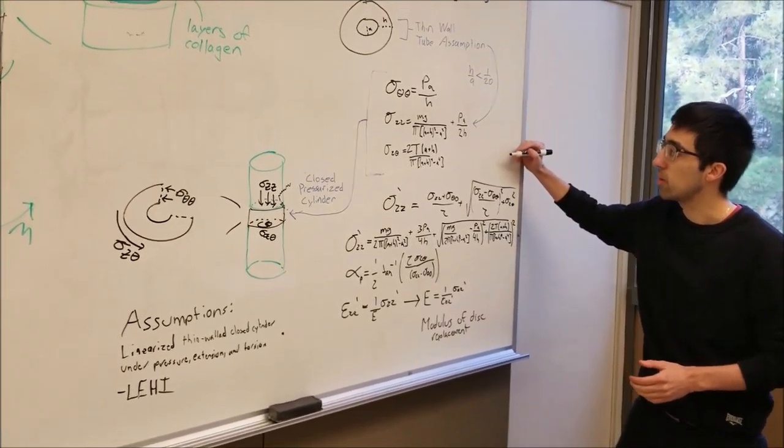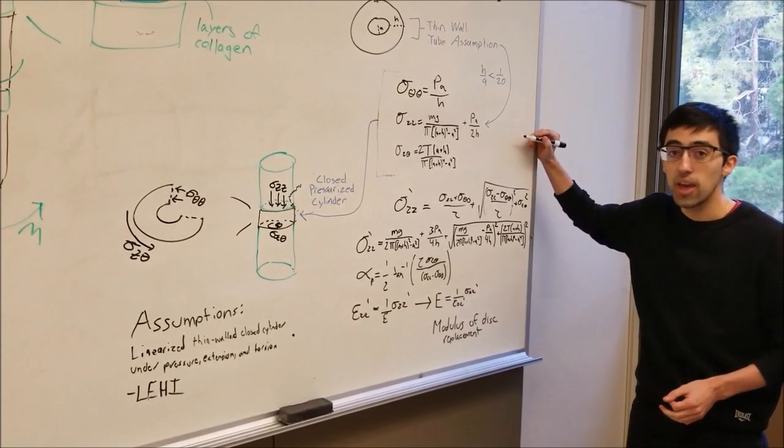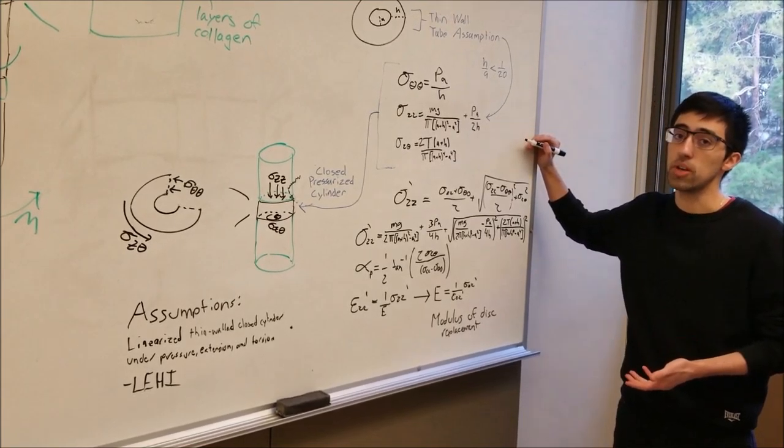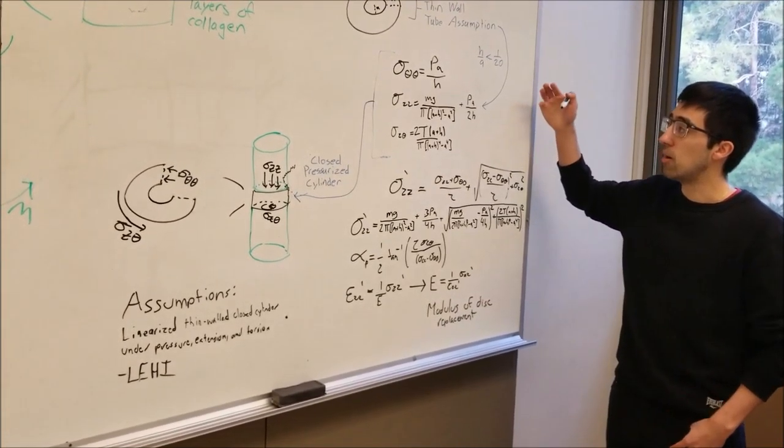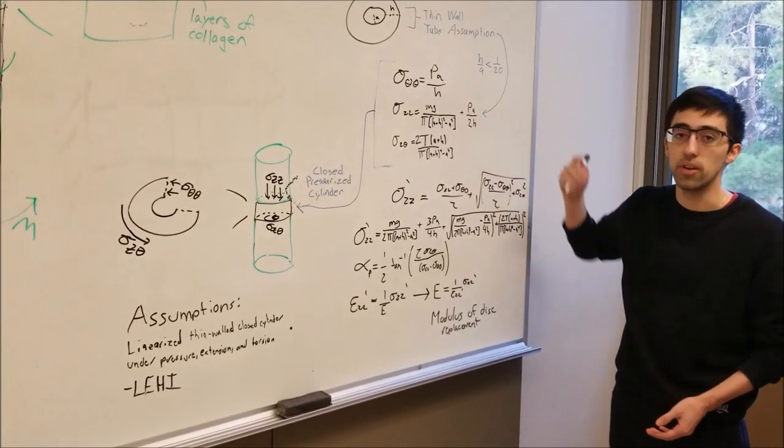From the Young's modulus, we can take these parameters that we solve for, such as pressure and weight, and make different types of disc replacements for different types of people, such as young people and old people who will have different pressures in their spine, different lengths, and different weights.